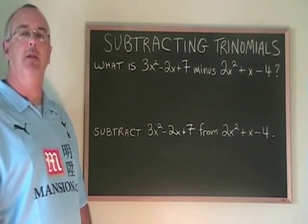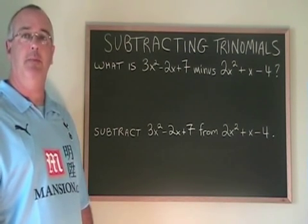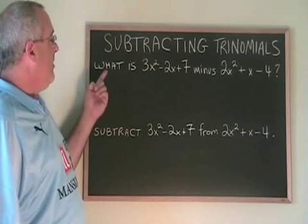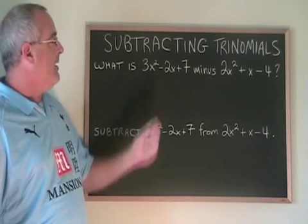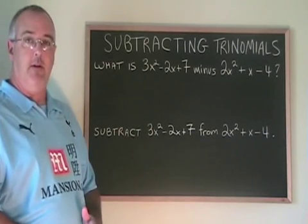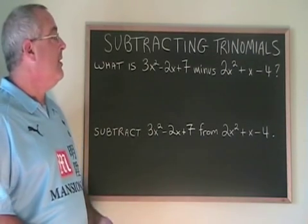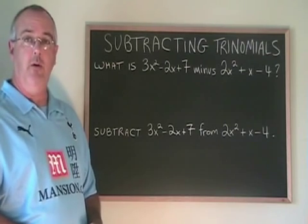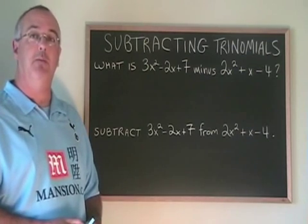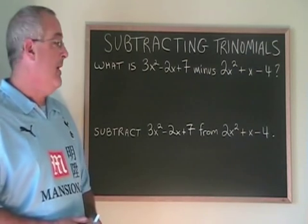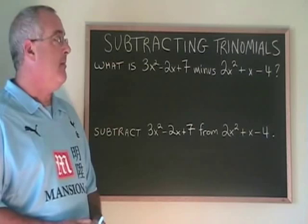This video will illustrate how to subtract two trinomials. There are two example questions on here. What is 3x squared minus 2x plus 7 minus 2x squared plus x minus 4? And subtract 3x squared minus 2x plus 7 from 2x squared plus x minus 4.